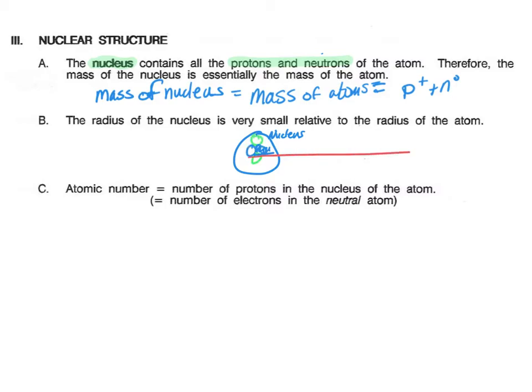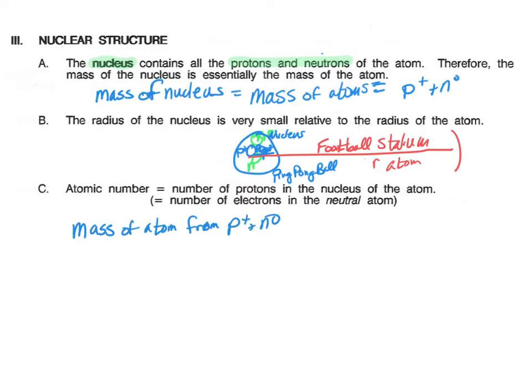If the nucleus is a ping pong ball, what that tells us is that the mass of the atom is determined by the number of protons and the neutrons, but the size is determined by the space that the electrons occupy.